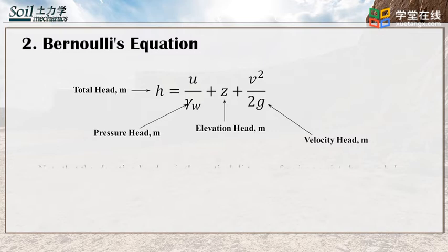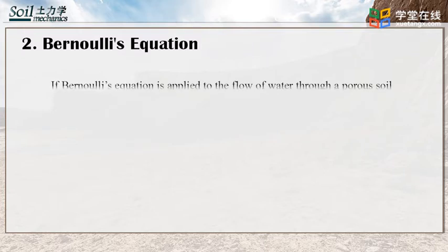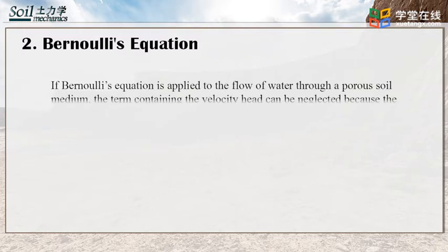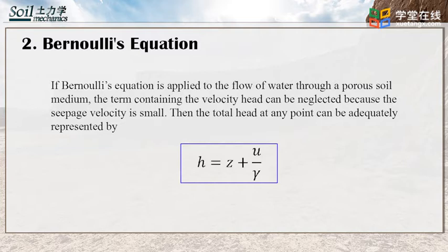The elevation head Z is the vertical distance of the given point above or below a datum. The pressure head is the water pressure U at that point divided by the unit weight of water, gamma water. If the Bernoulli equation is applied to the flow of water through a porous soil medium, the term containing the velocity head can be neglected because the seepage velocity is small. Then the total head at a given point can be adequately represented by H equals Z plus U over gamma water.